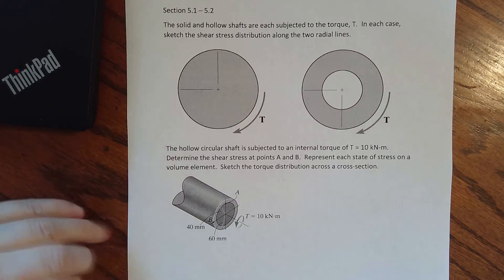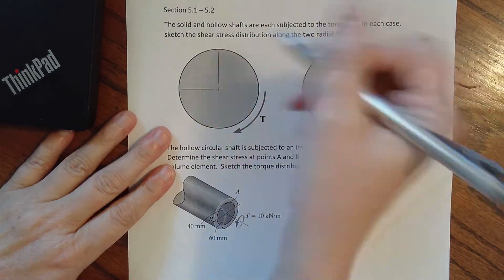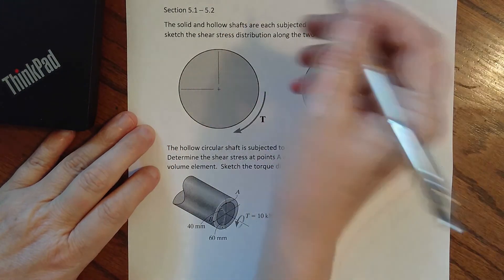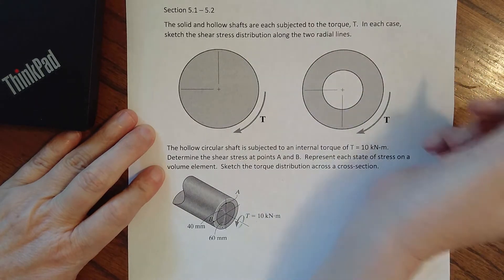Okay, so we are in section 5.1 and 5.2, and this is page one, so I guess example one and two, and we are now looking at torsion.